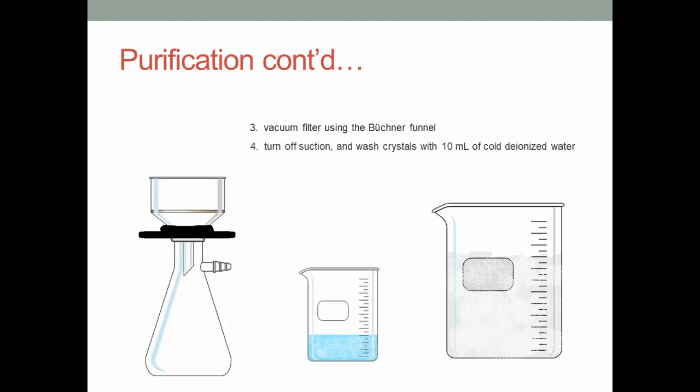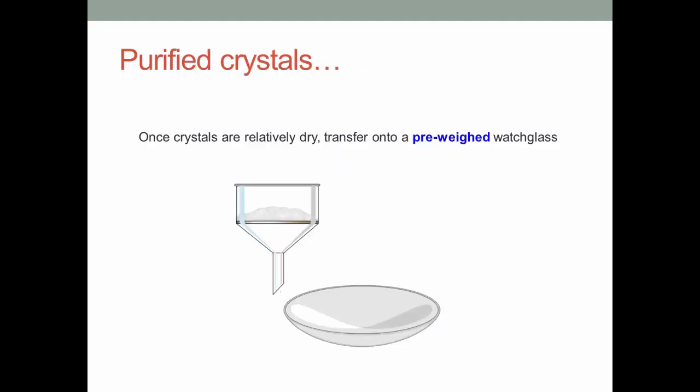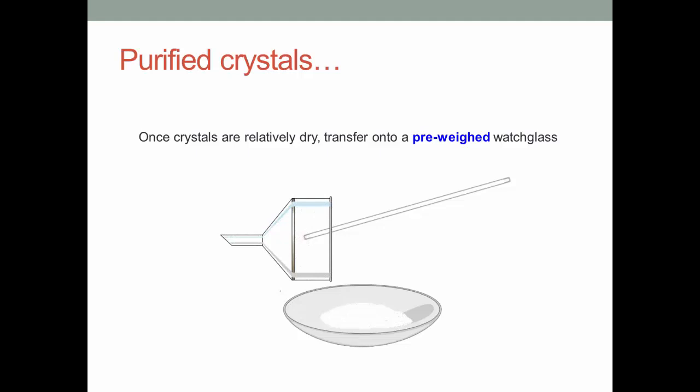When done, turn off the suction and wash the crystals with 10 ml of cold, deionized water. Then, turn suction back on and allow the crystals to dry as much as possible. Once the crystals are relatively dry, transfer them onto a pre-weighed watch glass. Re-weigh the watch glass to determine the mass of crystals. And keep your crystals because they will be needed next week.